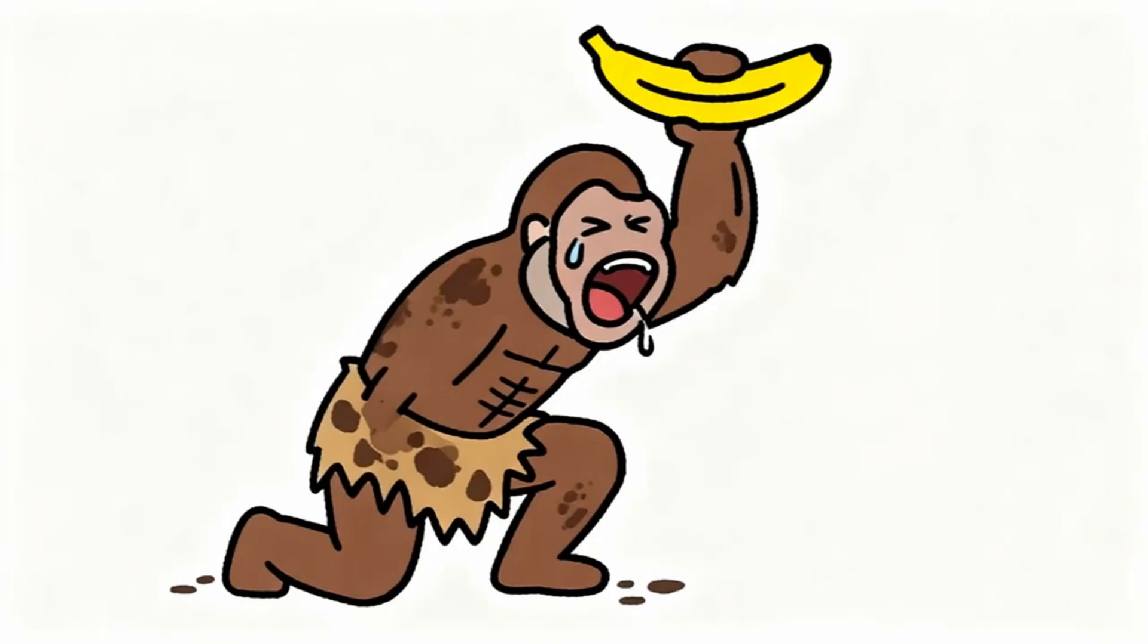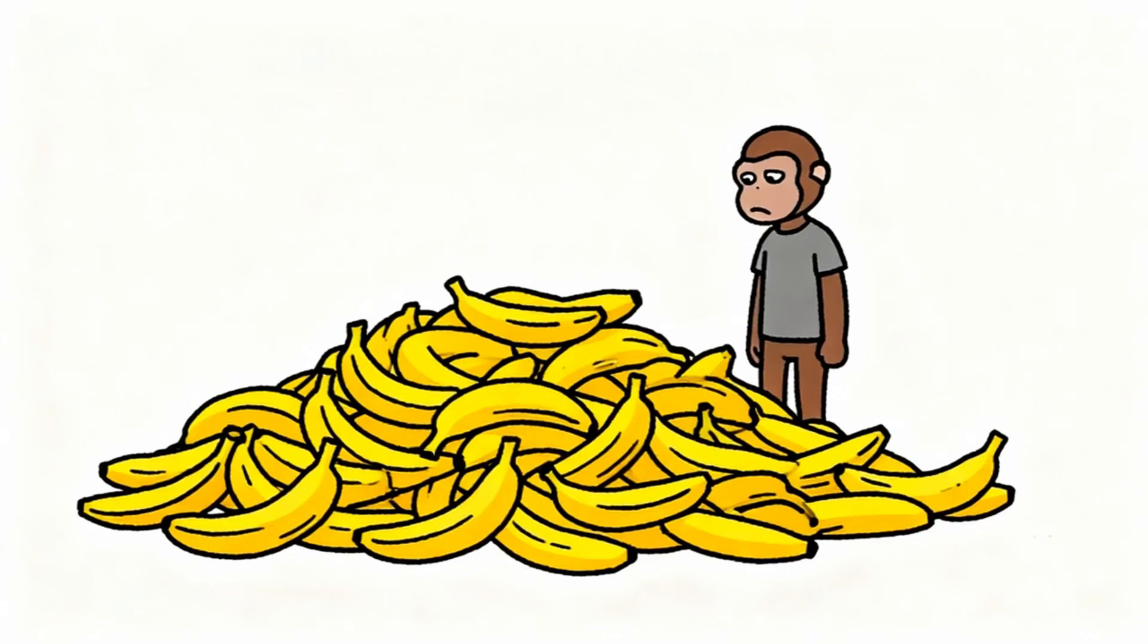Monkey brain evolved over millions of years expecting bananas to be rare and difficult to obtain. When monkey finally found banana after hours of searching, the dopamine reward felt incredible because it was earned through effort and scarcity. This system worked perfectly when bananas were actually scarce. Monkey brain learned to value what was hard to get. Modern world flips this system upside down.